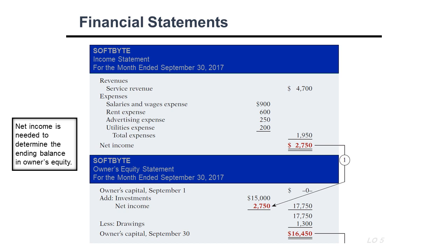When preparing financial statements, we always start with the income statement, then the owner's equity statement, then the balance sheet. This is because the result of the income statement is used in the owner's equity statement, and the result of the owner's equity statement is used in the balance sheet. The income statement is based on all revenues minus all expenses, and the result is net income.